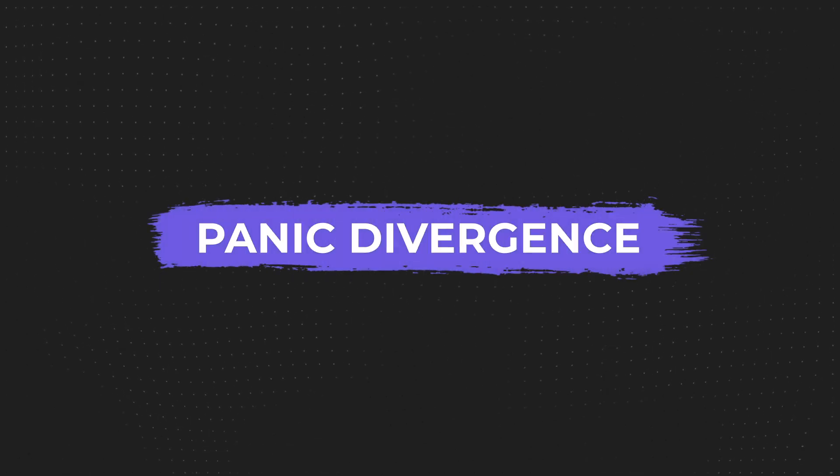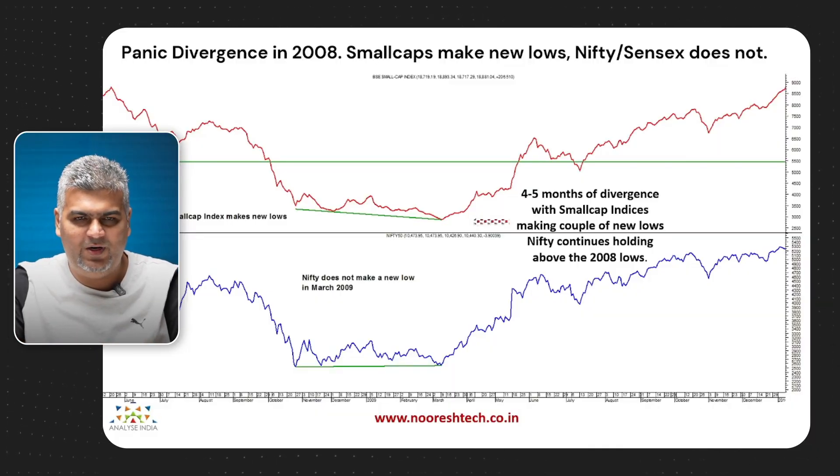The next pattern to look out for is what we call panic divergences. Just as with Dow Theory at the top — where the Nifty is struggling but small caps are going crazy on the upside (euphoria) — panic divergence is exactly the opposite. The Nifty is not falling a lot, but the small cap index is falling sharply. This is the point of extreme pessimism: on the top side small caps go crazy upward, on the bottom side small caps go crazy downward.